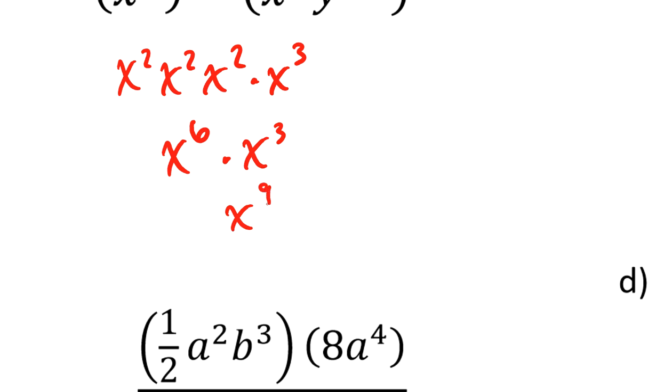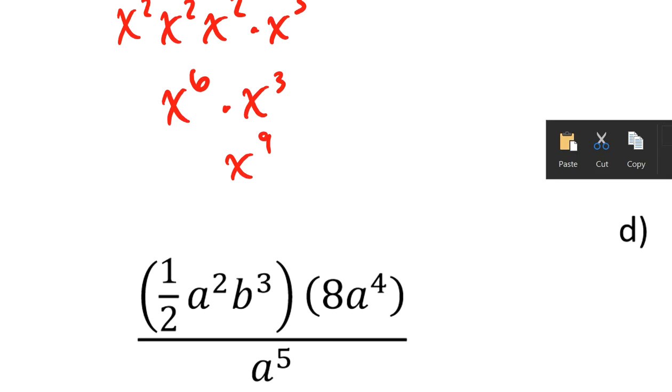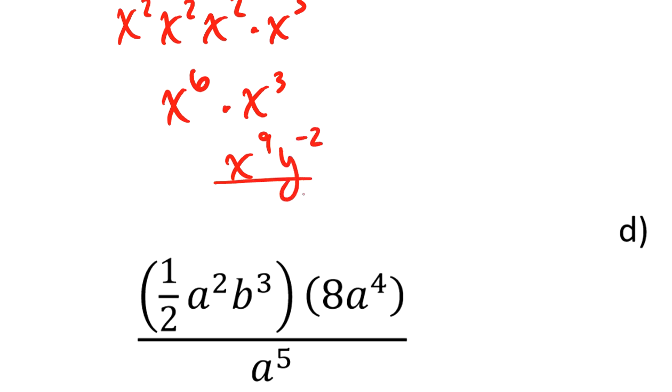Again, I can write them all out and count them and there's going to be 9 factors of x. The final part of this is I've got a y to the negative 2nd power. And I'm just going to basically wipe out that negative exponent by multiplying by a giant 1 in the form of y squared over y squared.